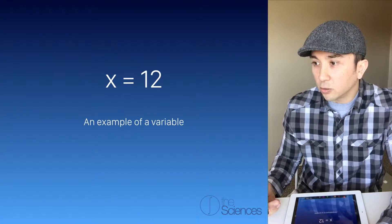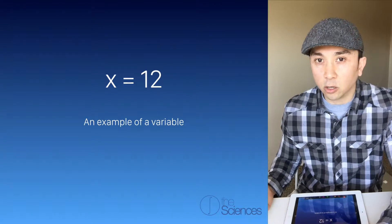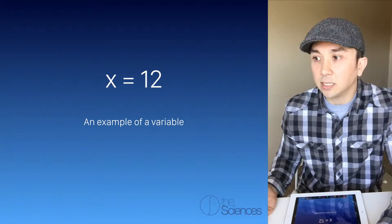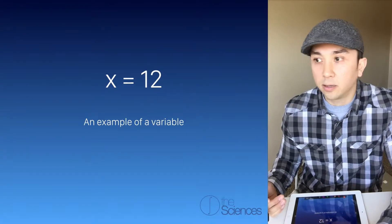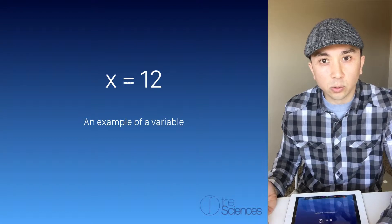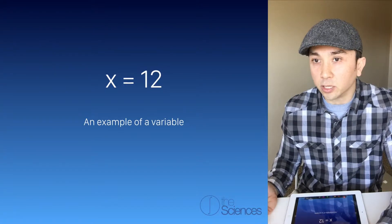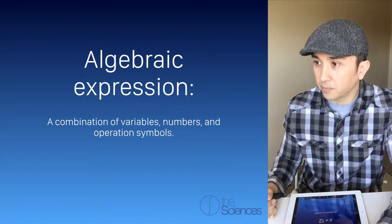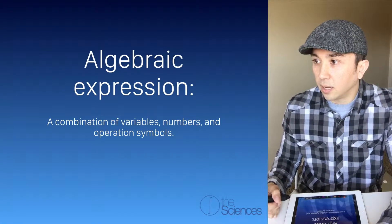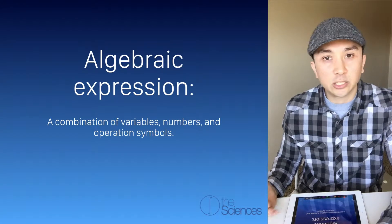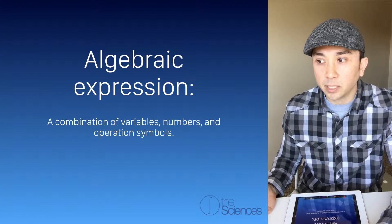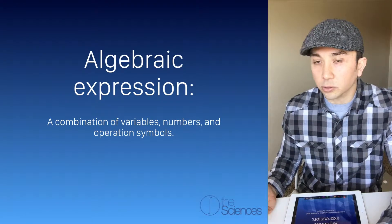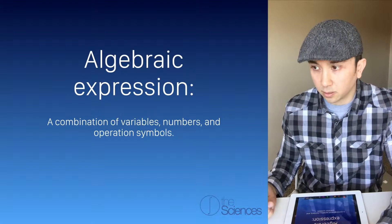So a variable is kind of like a code word. In this example, the letter x is a code word for the number 12. An algebraic expression is just a combination of variables, numbers, and operation symbols.